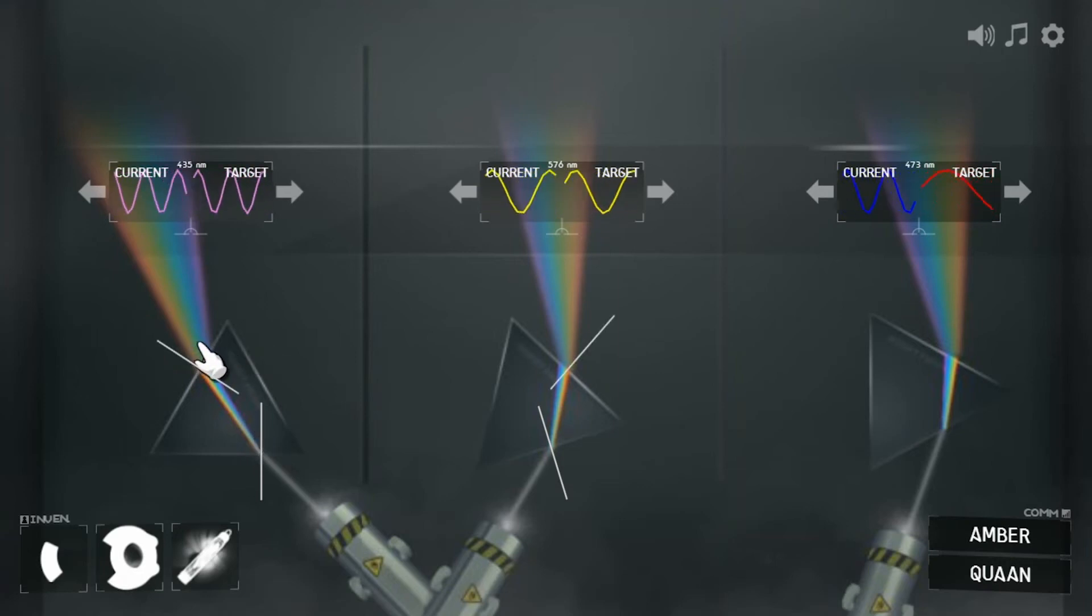And light bends away from the normal line when it goes out of the glass. That's because light travels faster in air than in glass and it always bends away from the normal when it speeds up.